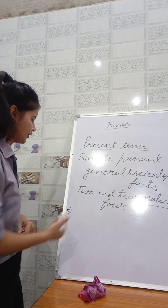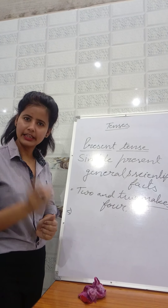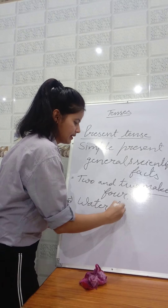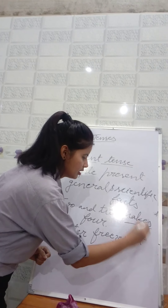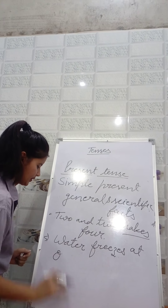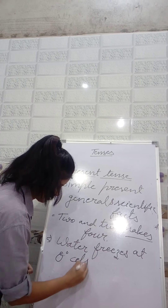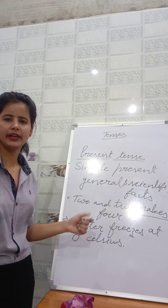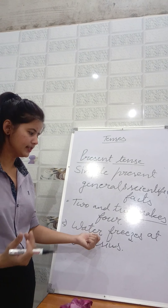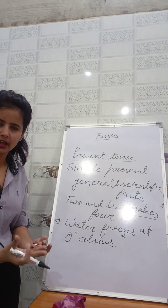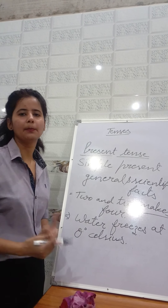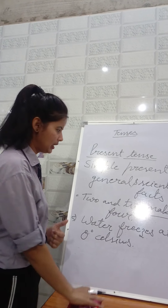The next one is scientific facts — what science tells us. These are called scientific facts. For example, if we take water at 100 degrees Celsius, it will start boiling — water boils at 100 degrees Celsius. This is also a fact. So we need to make these sentences in simple present tense when they are facts that cannot be changed.